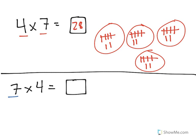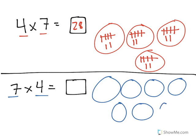Now, down here we have 7 times 4. That means 7 groups with 4 in each group.